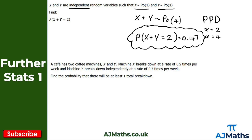The second example is more like what you're going to see on an exam paper. We've got a cafe with two coffee machines x and y. Machine x breaks down at a rate of 0.5 times per week, and machine y breaks down independently at a rate of 0.7 times per week. We want to find the probability that there will be at least one total breakdown. Because x and y are independent we can add them together, giving x plus y.